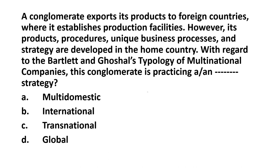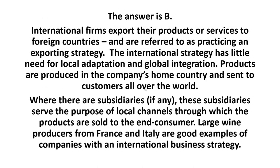A conglomerate exports its products to foreign countries where it establishes production facilities. However, its products, procedures, unique business processes, and strategy are developed in the home country. The answer is B. International firms export their products or services to foreign countries and are referred to as practicing an exporting strategy. The international strategy has little need for local adaptation and global integration. Products are produced in the company's home country and sent to customers all over the world. Large wine producers from France and Italy are good examples of companies with an international business strategy.